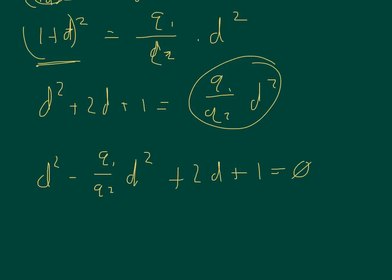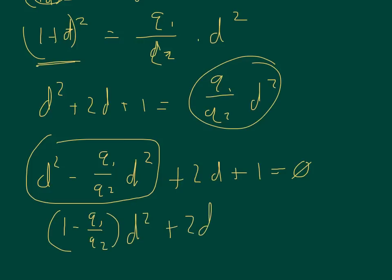Now out of this, I can factor out D squared. You'll get 1 minus Q1 over Q2 times D squared plus 2D plus 1 equals zero. And I hope this is starting to look like a quadratic equation.